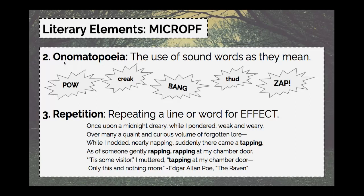Onomatopoeia is our next element. This is the use of sound words — words that sound like what they mean. Examples include pow, bang, zap, creak, and thud — they make me think of a comic book. Anytime we're reading and a word is being used as a sound, that is an example of onomatopoeia. If you've been watching a horror movie and a character walks into an old abandoned building with the door creaking open, that sound creates a bit of suspense. Whether you're viewing a movie or reading a story, those sound effects are there for a reason — to create suspense for the reader.